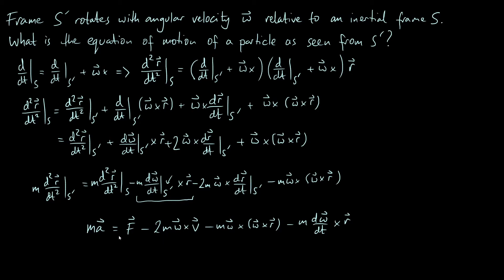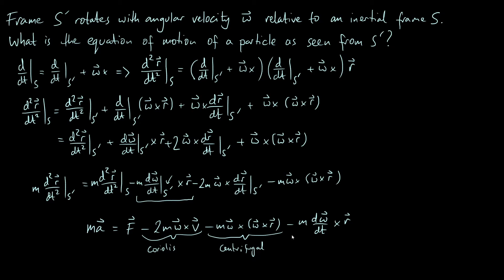What we've found is that Newton's second law is not actually obeyed in a rotating frame — if it were, we'd simply have ma equals F, but we have all this extra stuff. Because these additional terms appear added to the normal force term, we call them fictitious forces. Each term gets a specific name: the term minus 2m omega cross v is called the Coriolis force; minus m omega cross (omega cross r) is the centrifugal force, probably the most widely known; and the last term is the Euler force.